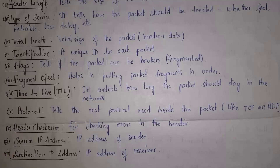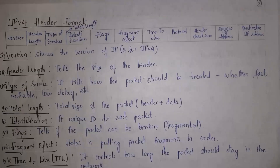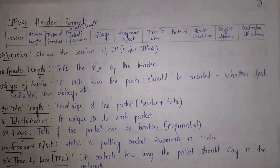The next fields are source IP address and destination IP address. Whenever a sender transfers data, the sender's IP address is included as the source IP address, and the IP address of the computer you want to transfer data to is the destination IP address. Both source IP address and destination IP address are included in the IPv4 header. This completes the header format of IPv4.